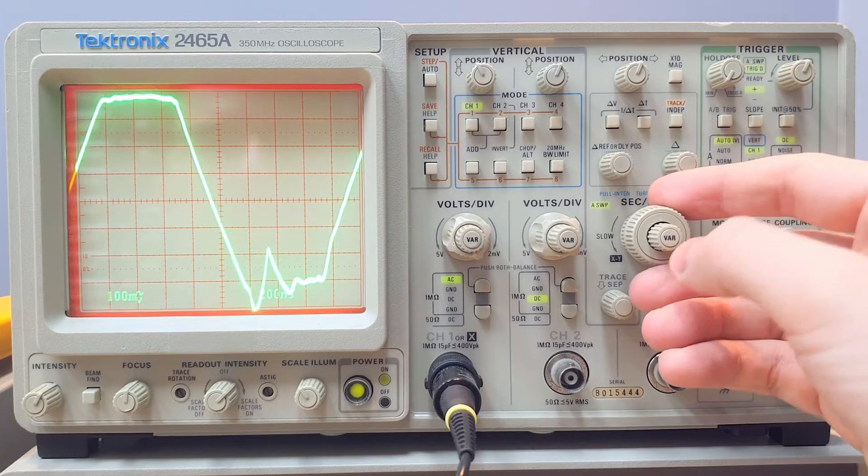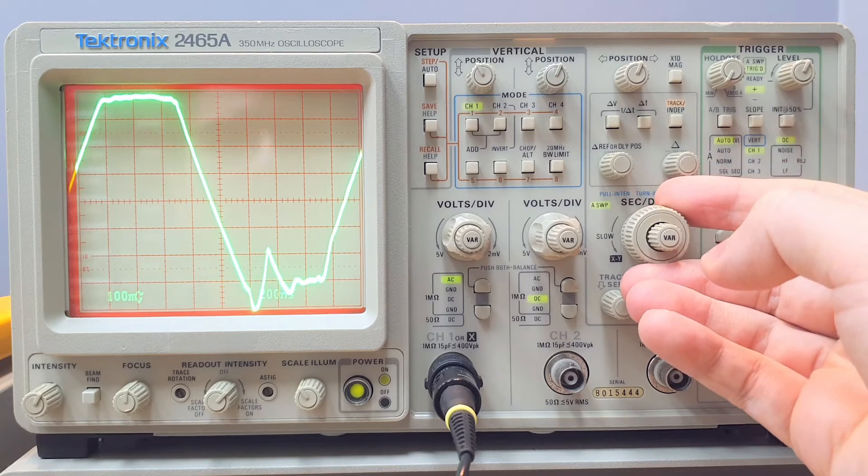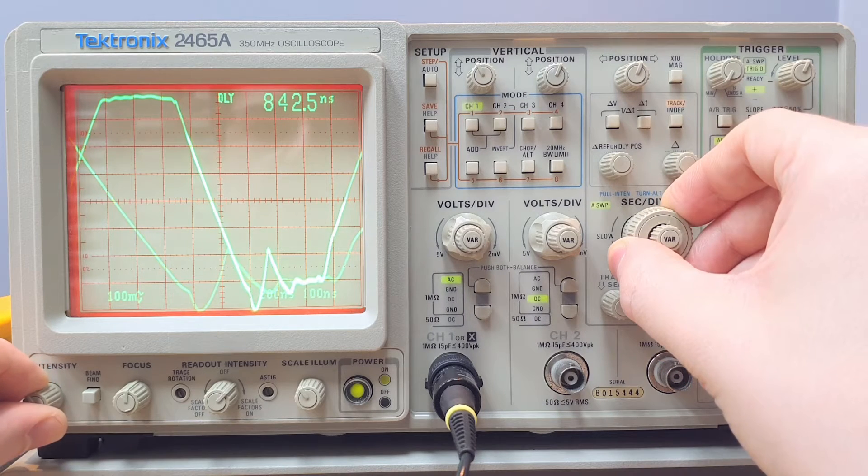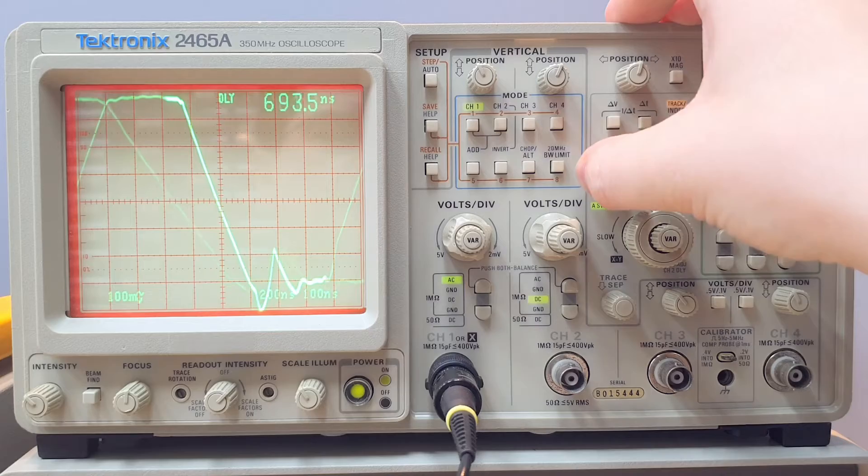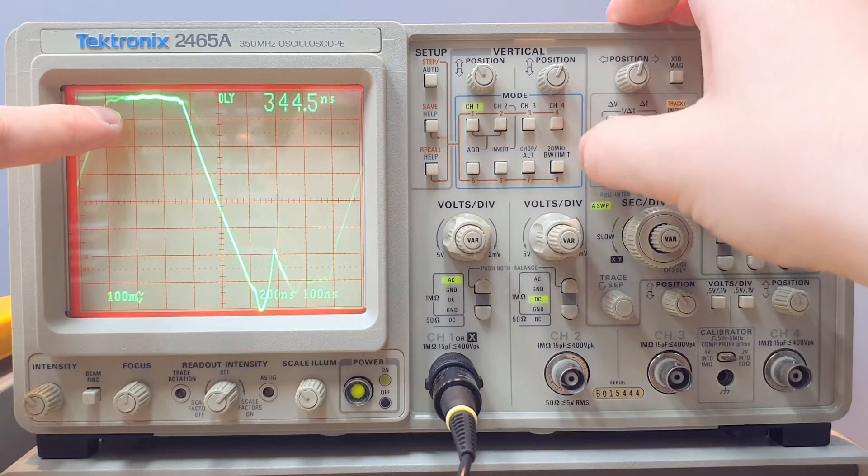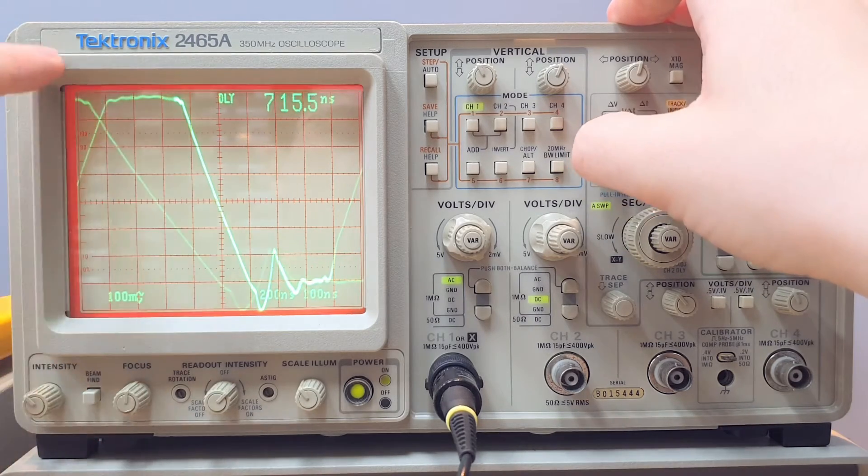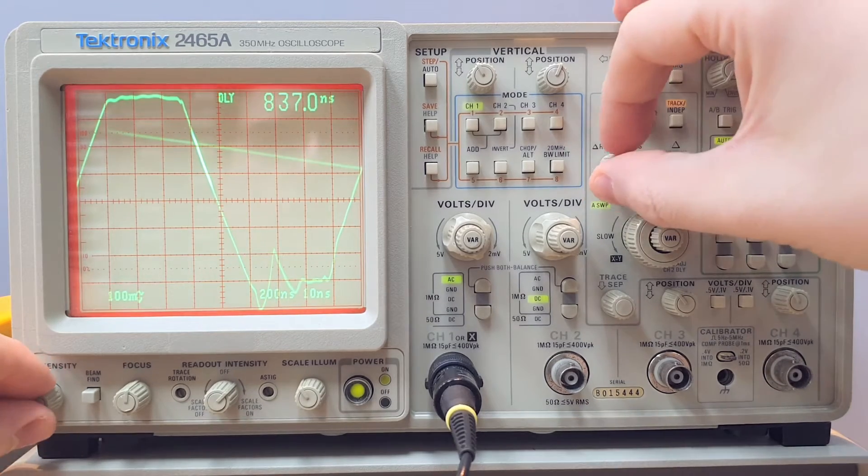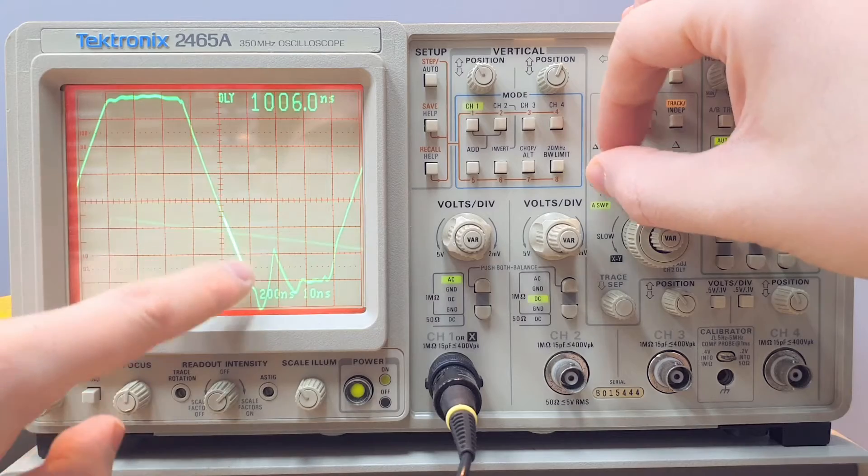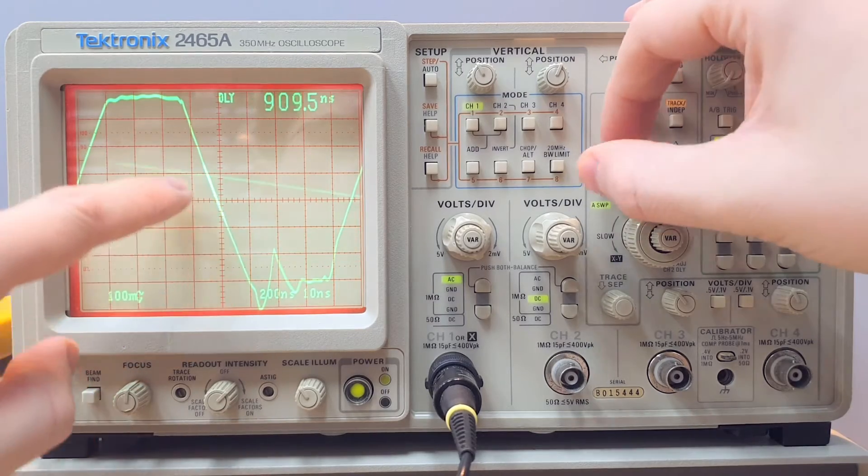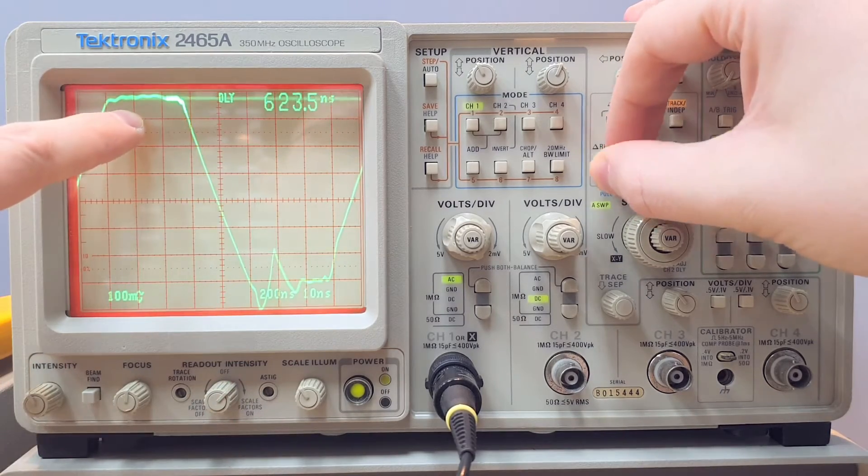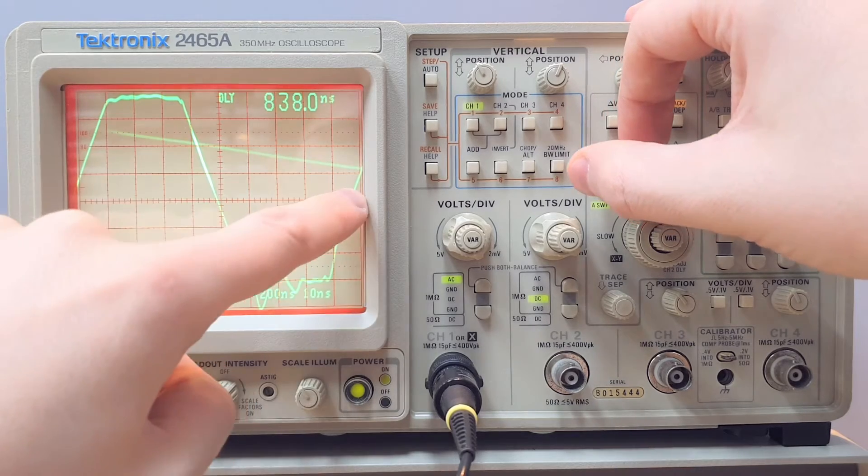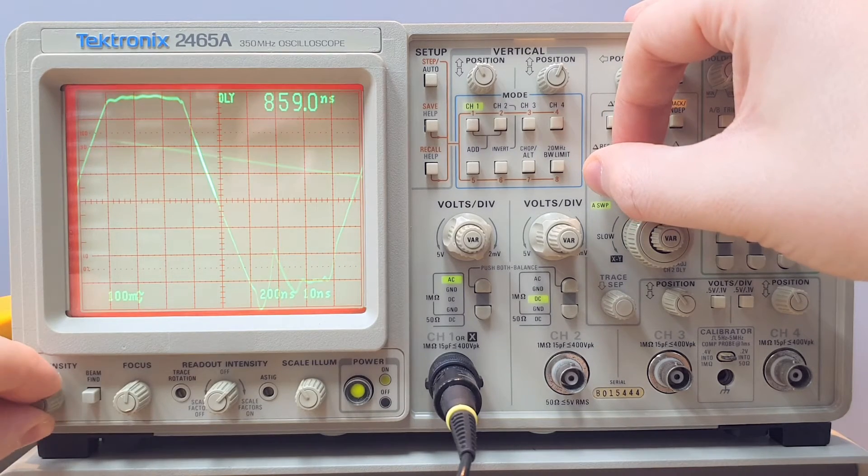In this machine here, we can enable the second time base. And if I reduce here the intensity, you can see that I can change the area, the section of the waveform that we are seeing on the other time base. We can change the position of where we are doing the zoom here. The zoom or actually the trigger of the second time base. And this is very powerful.